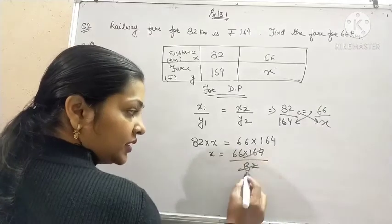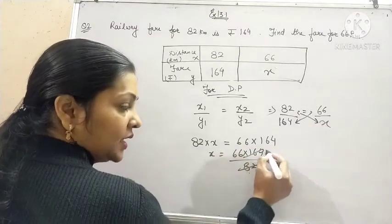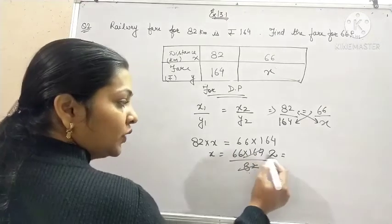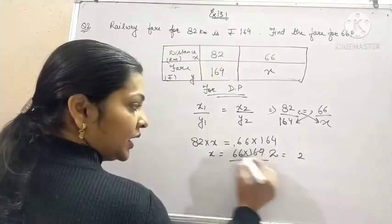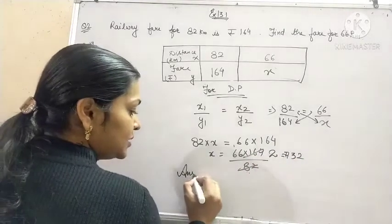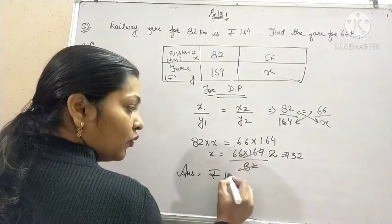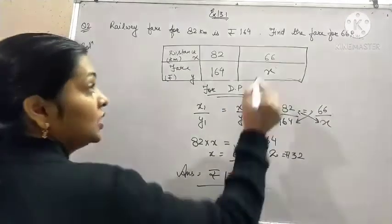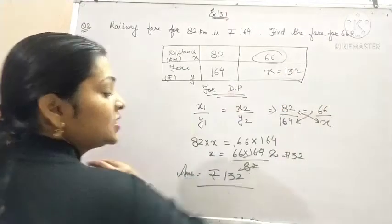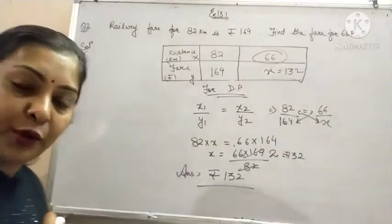And it is clearly visible that 164 is divided by 82 on 2. So we have 66×2=132. So our answer is Rs. 132. So for travelling 66 km the person has to pay Rs. 132.